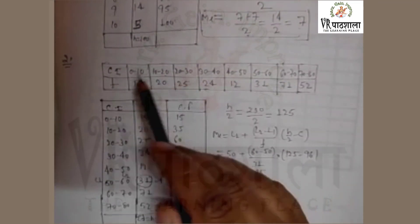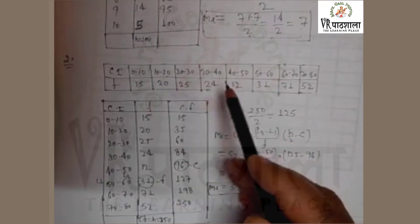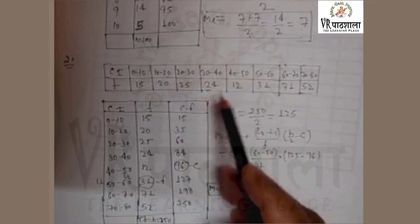Now the next example: the class interval is given and frequency is given. This is grouped data and this is the continuous frequency.